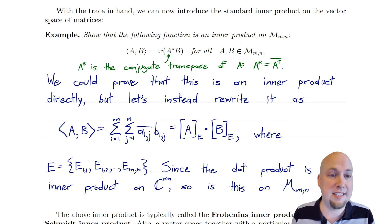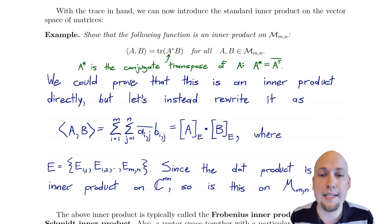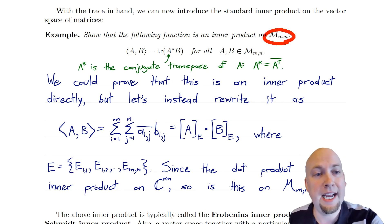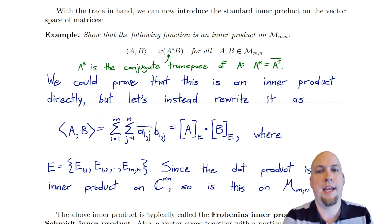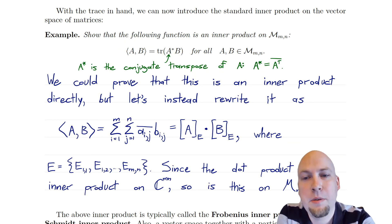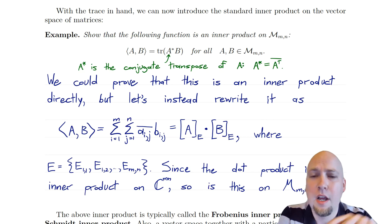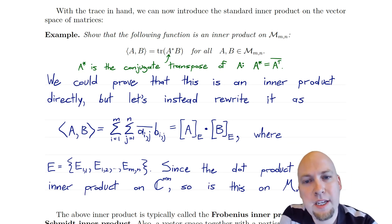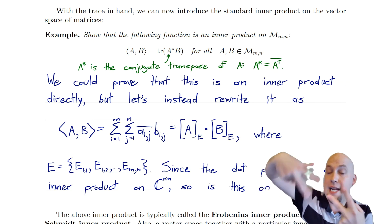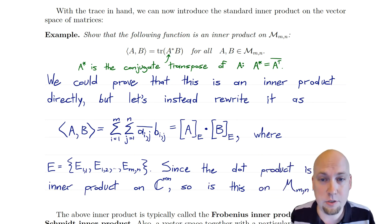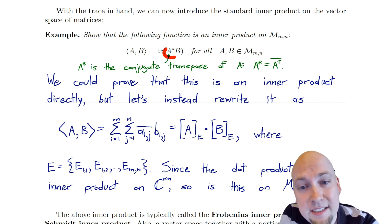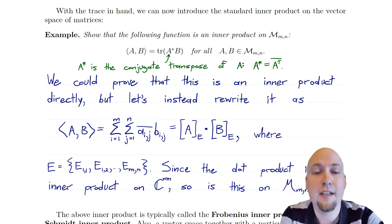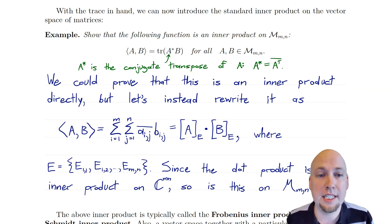For our purposes in this class, the reason we care about the trace is that it lets us define an inner product on the space of m×n matrices — specifically the standard inner product on this space. The standard inner product between two matrices A and B is defined as the trace of A* times B, where A* denotes the conjugate transpose of A. That is, you take A, transpose it, and put a complex conjugate on every entry. Taking the trace of that product A*B gives us an inner product on the space of matrices.